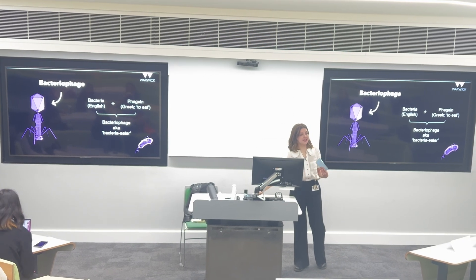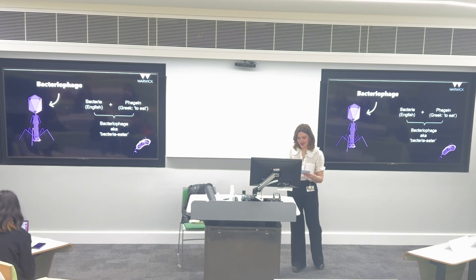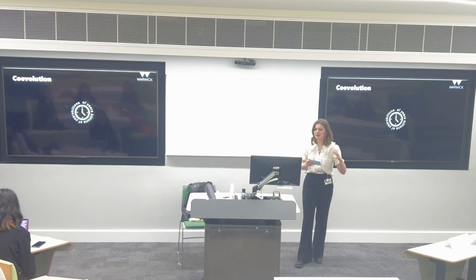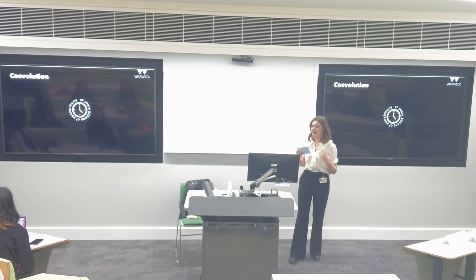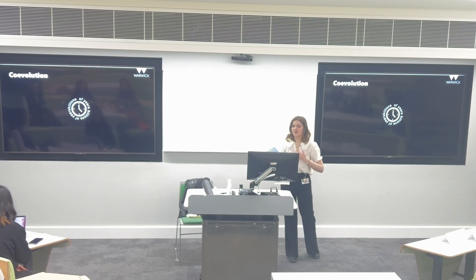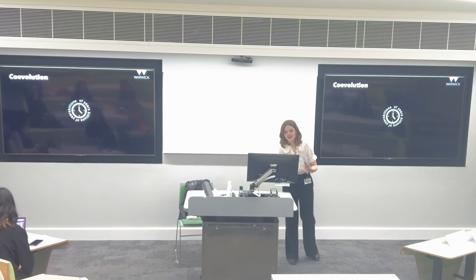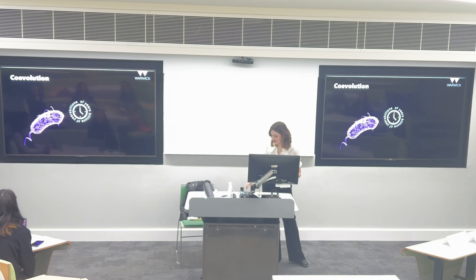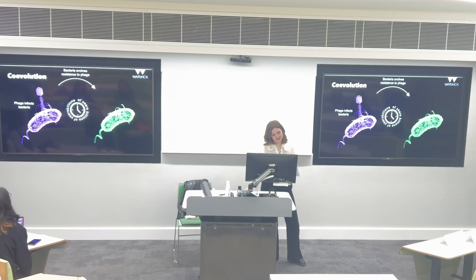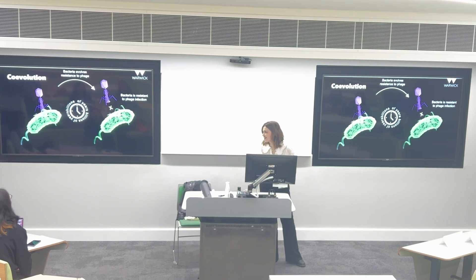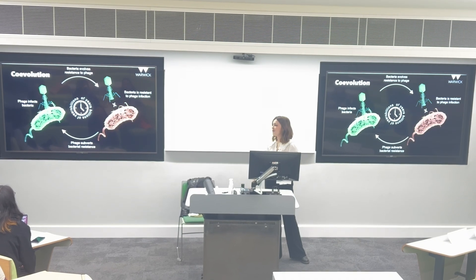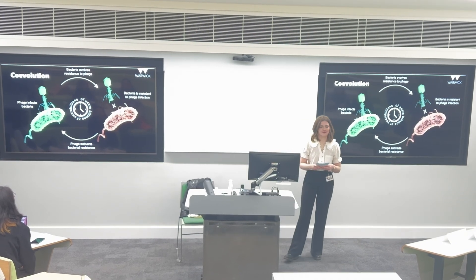I'm interested in what the relationship between these two organisms actually looks like. Since about 3 billion years ago, bacteria and phage have been in a constant co-evolutionary battle, also called an arms race — basically evolving these arsenals against each other. So I've made a little illustration for this: bacteria will be infected by phage, then bacteria will evolve resistance so the phage can't infect. But then the phage will evolve to subvert these resistance mechanisms, and then the bacteria will evolve again — and so on and so forth.